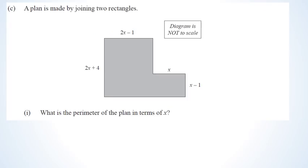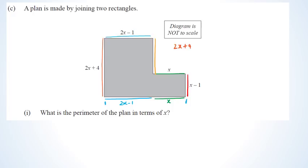Question C: we've got a couple of rectangles put together and it's asking for the perimeter in terms of x. The bottom length is 2x minus 1, and the green part is x. The orange part (2x + 4) take away the red part (x − 1) gives us the yellow line — making sure you put that in brackets: 2x + 4 minus (x − 1), which simplifies to x + 5.